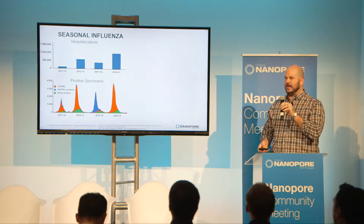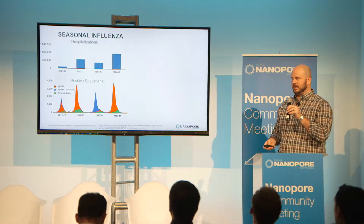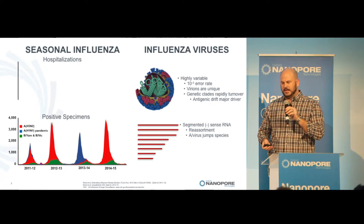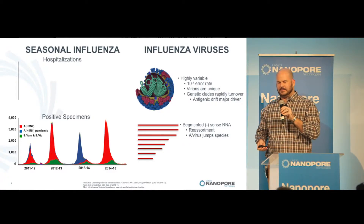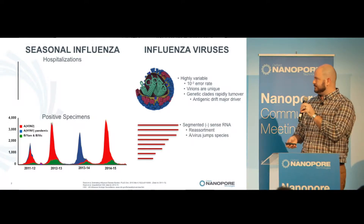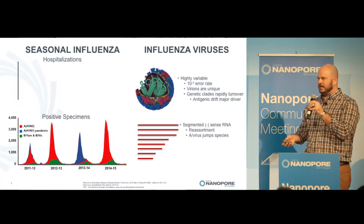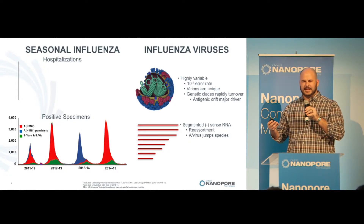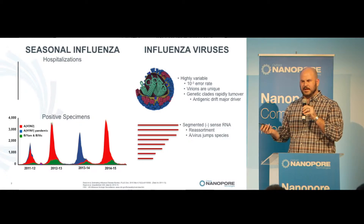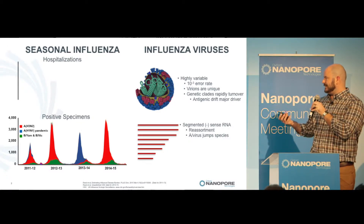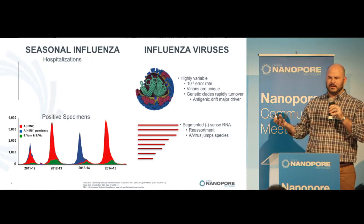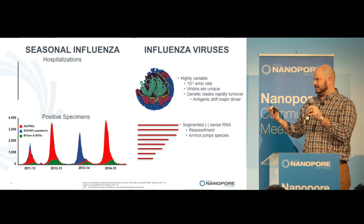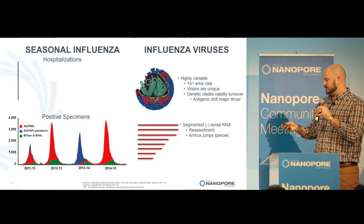Seasonal influenza causes up to a million hospitalizations a year in the U.S., caused primarily by influenza A viruses. The influenza virus is highly variable with a high error rate of replication, to the point where the virions are essentially unique. The genetic clades rapidly turn over, and antigenic drift is a major driver of this. The genome is a segmented negative sense RNA, which is why we're interested in direct RNA sequencing. It's capable of reassortment and jumping species.